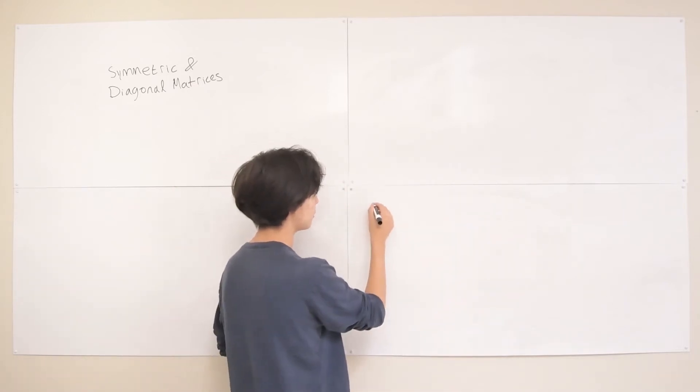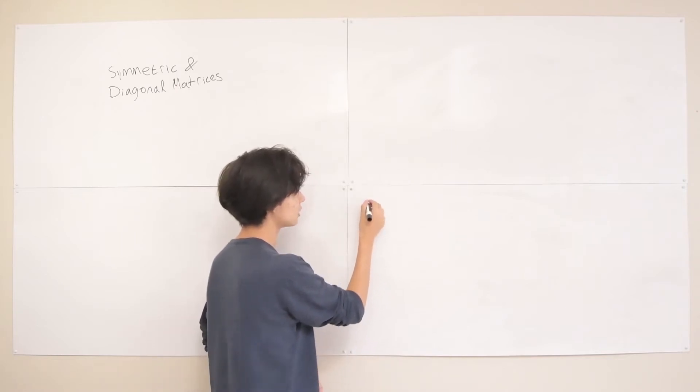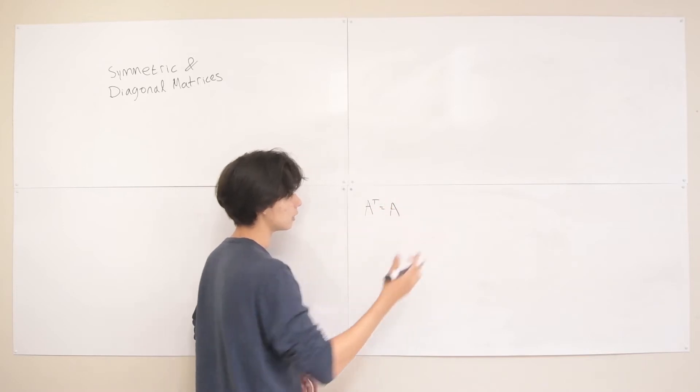A symmetric matrix is basically if some A is symmetric, then A transpose is equal to A. So when you flip it, it equals the same thing.